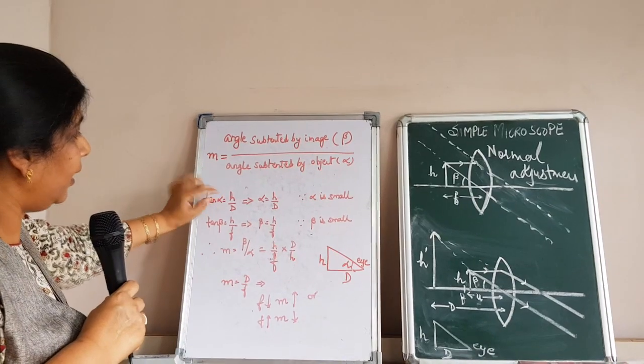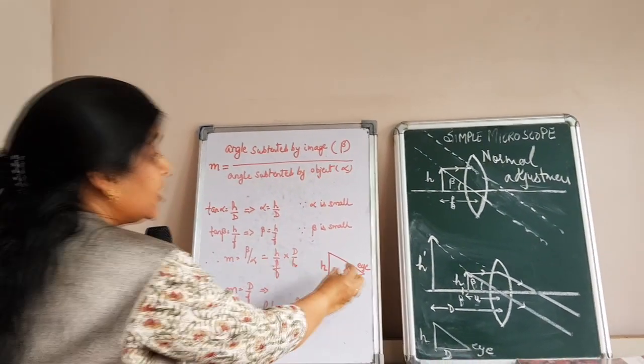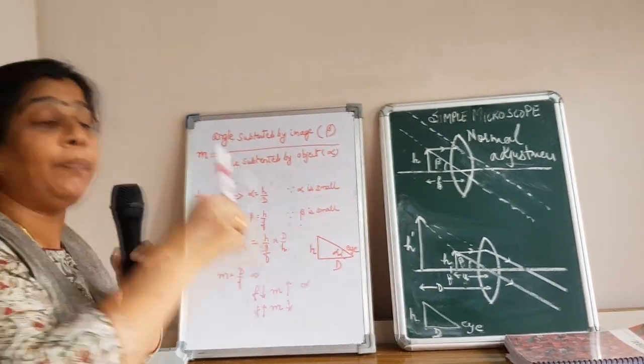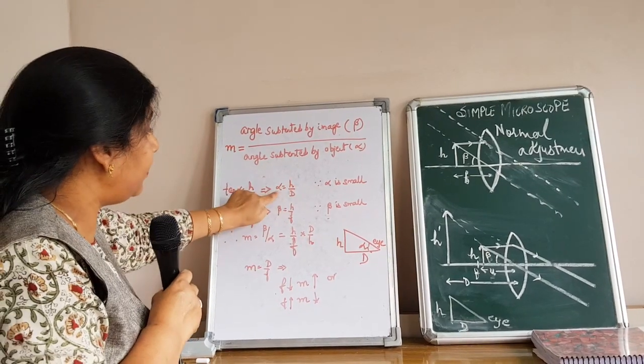For this figure, what is tan alpha? H upon D, which is equal to alpha, approximately H by D, because this angle is not going to be very big. It is going to be very small. So I can write tan alpha as simply alpha.